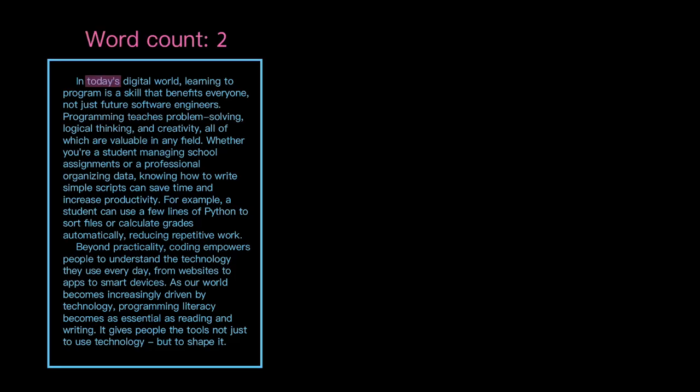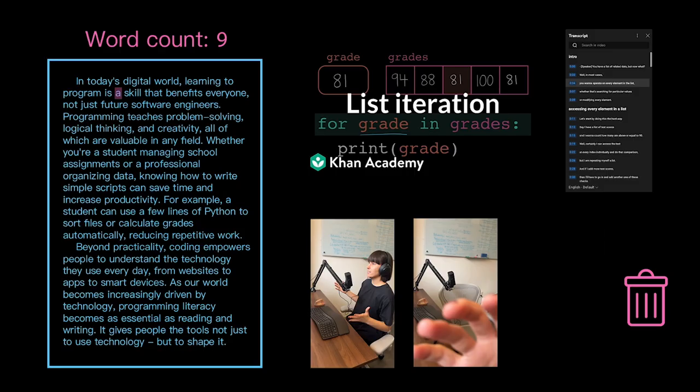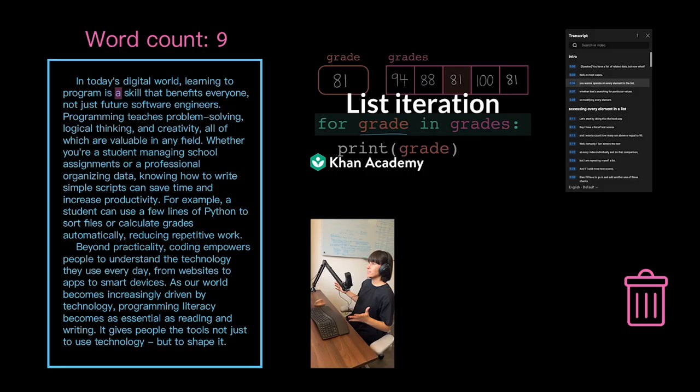Modern computers automate tasks beyond just mathematical calculations. They can count the words in an essay, generate captions for a video, or clean up old photos. We often call these types of programs scripts. A script is a small, single-purpose program that we run on demand to perform a specific task.